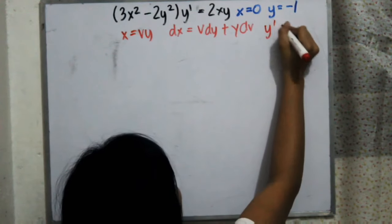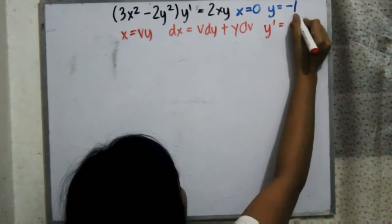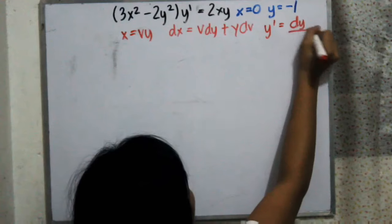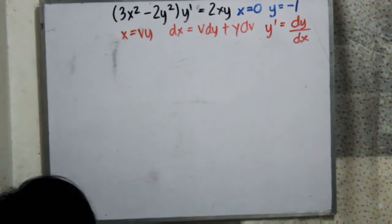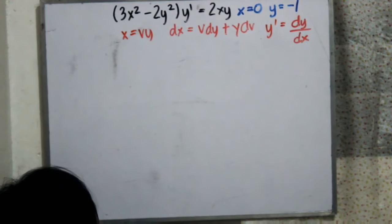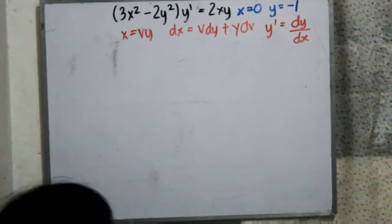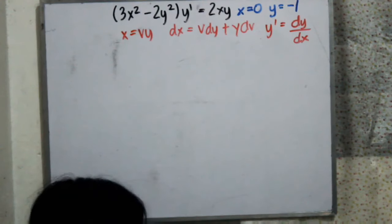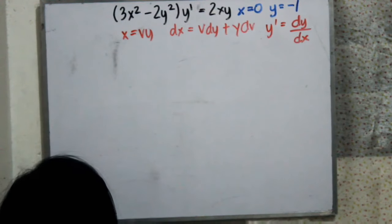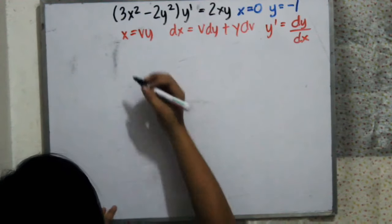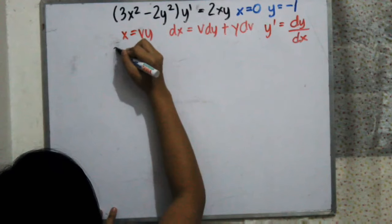We set x equal to 0 and y equal to negative 1 as initial conditions. We let x equal to vy, so the derivative of x gives us dx equal to vdy plus ydv.